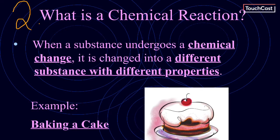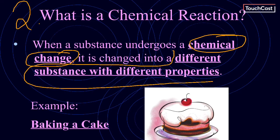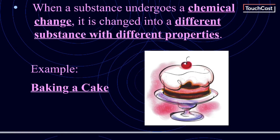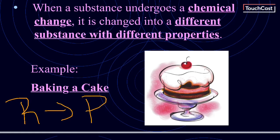Question number two is: what is a chemical reaction, or pretty much talking about chemical changes? It says that when a substance undergoes a chemical change, it is changed into different substances with different properties. If you remember the video where I talked about baking a cake — the reactants are on the left, your ingredients, mixing things together. Then you yield your product: your beautifully baked cake. Make sure you write down your baking cake example.